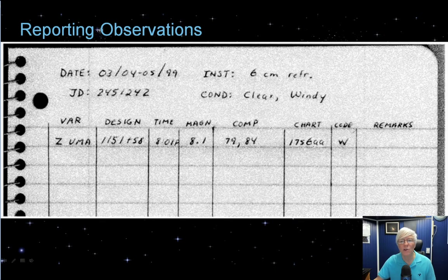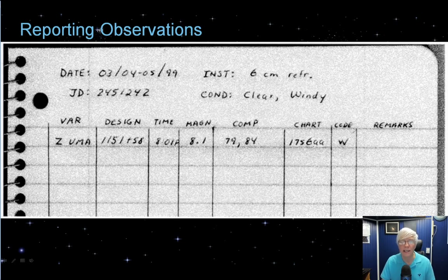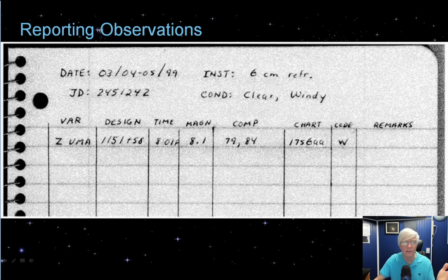Here's an example of how you would log your observation. All you need is a spiral-bound ruled notebook — that's good enough. Some observers use a spreadsheet on a laptop right at the telescope, entering data during the time of observation. Others write it down and then record observations digitally after going inside. Use whatever works for you.